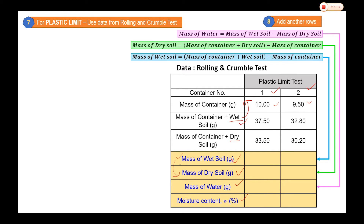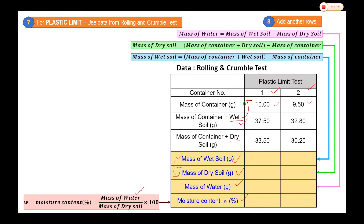For the mass of water, we subtract the dry soil from the wet soil. Then we determine the moisture content using the same equation: mass of water divided by mass of dry soil, multiplied by 100, since we want the value in percentage.